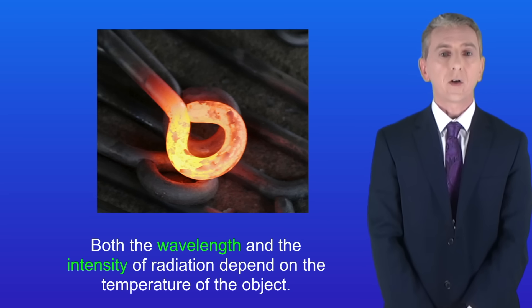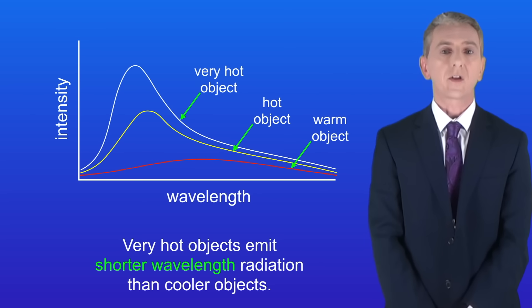Now I'm showing you here a piece of hot metal and this brings us to a key fact. Both the wavelength and the intensity of radiation depend on the temperature of the object. Very hot objects emit shorter wavelength radiation than cooler objects, and we can see that with this graph.